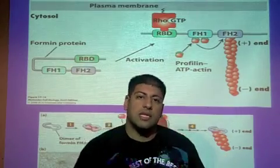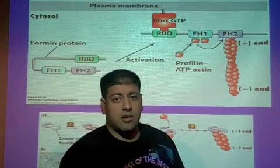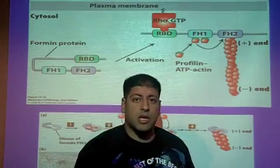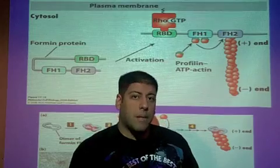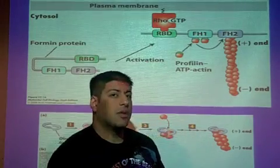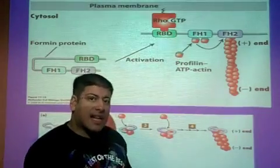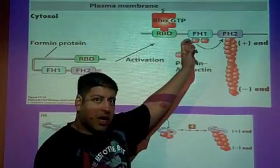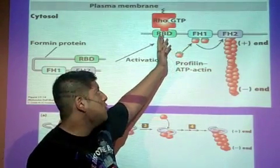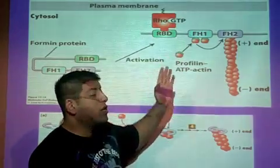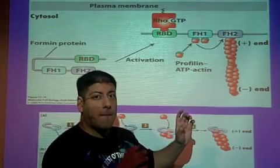When the cell receives a signal to activate actin polymerization, a G-protein gets activated — specifically the type we've seen in signaling that gets turned on with GTP bound to it. The G-protein of interest here is called rho. Rho gets activated by an external signal that binds to a receptor, which triggers rho's activation. So rho, which originally had GDP bound to it, is now activated and has GTP bound to it.